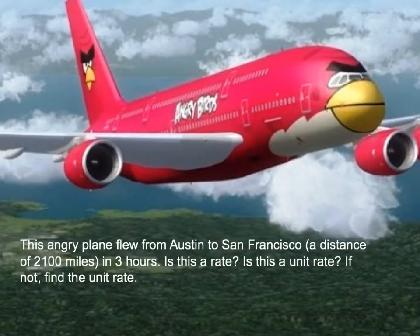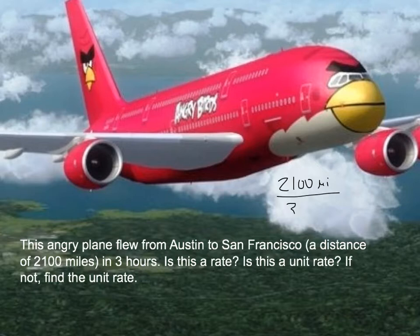Alright, so this angry plane flew from Austin to San Francisco a distance of 2,100 miles in three hours. Is this a unit rate? Is it a rate? And if not, if it's not a unit rate, let's find the unit rate. So let's see, 2,100 miles in three hours. So as a fraction, I would write that as 2,100 miles per three hours. So is it a rate? Well, yeah, it's definitely a rate. But is it a unit rate? No, because this isn't a 1.